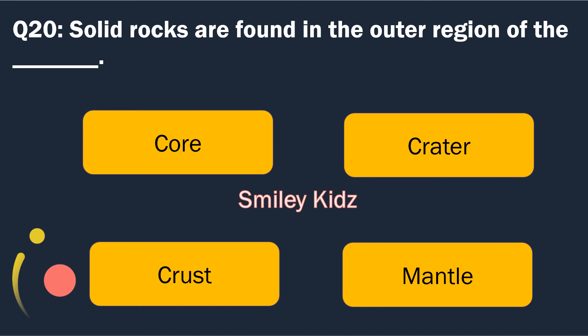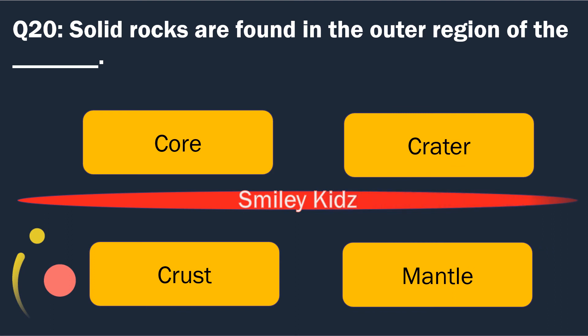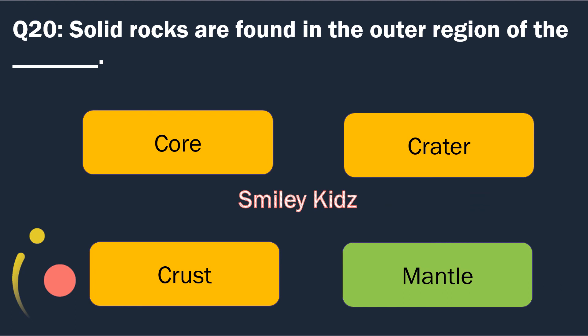Question number 20. Solid rocks are found in the outer region of the blank. Options are: Core, Crater, Crust and Metal. The right answer is Mantle. Solid rocks are found in the outer region of the Mantle.